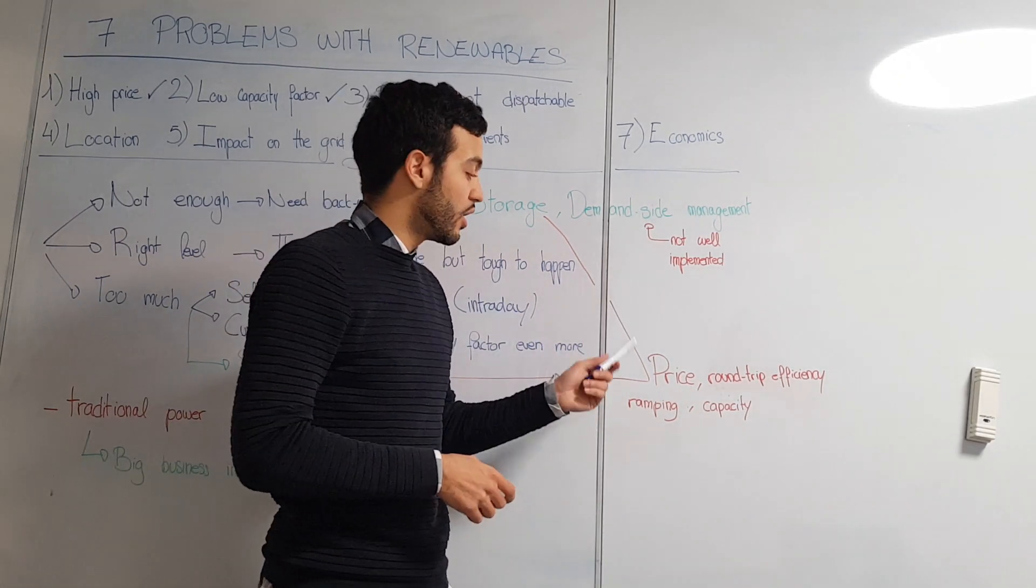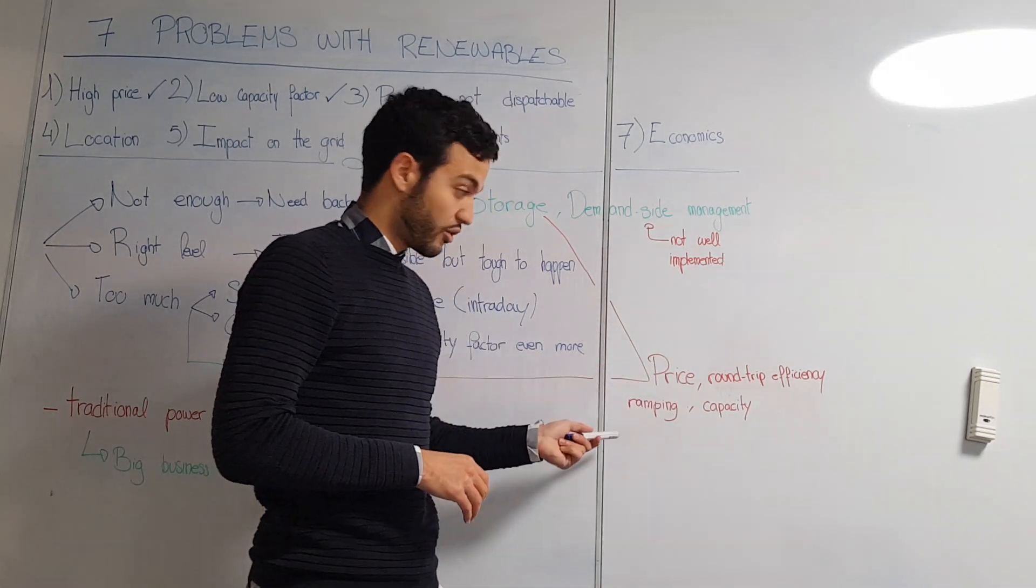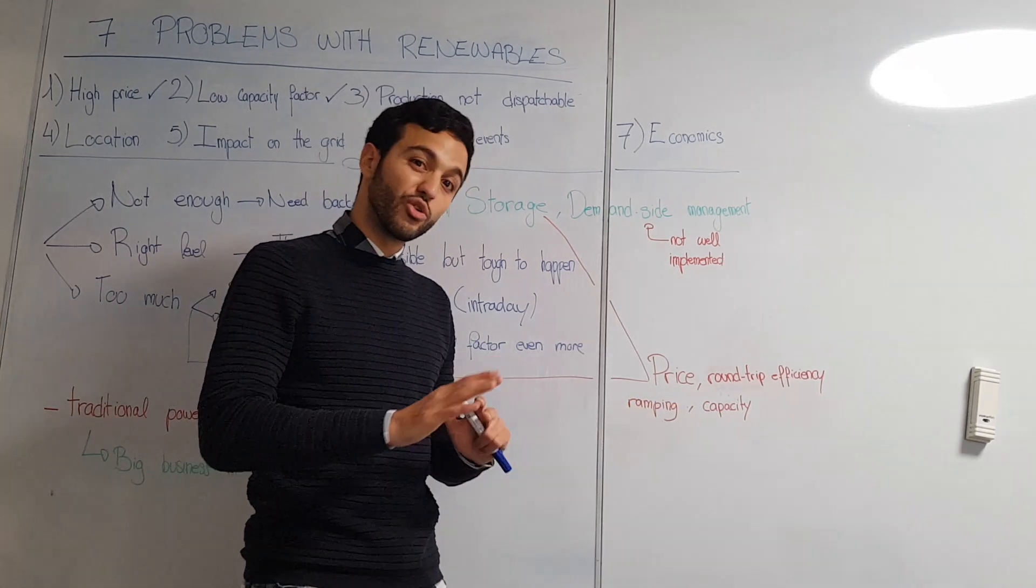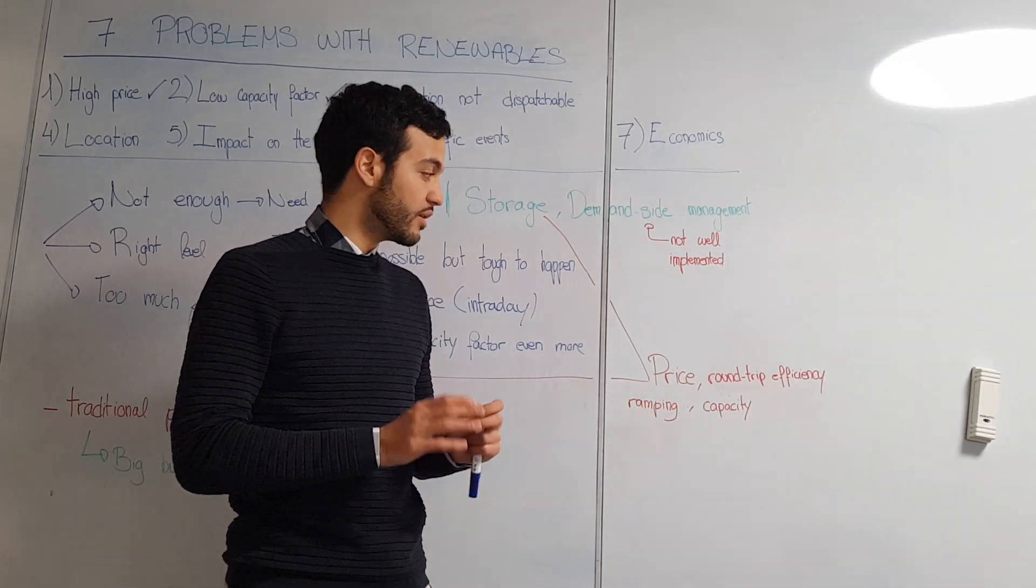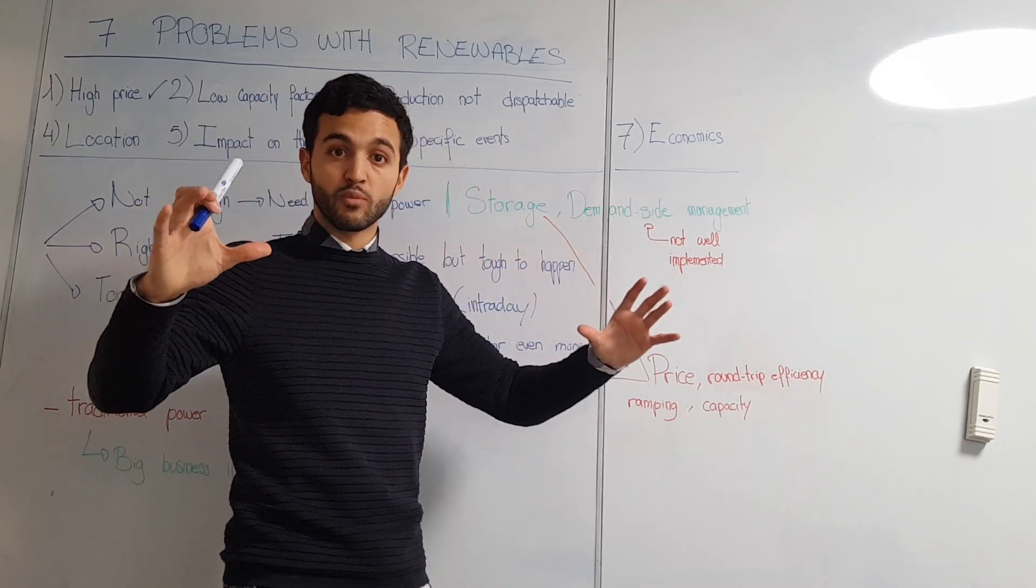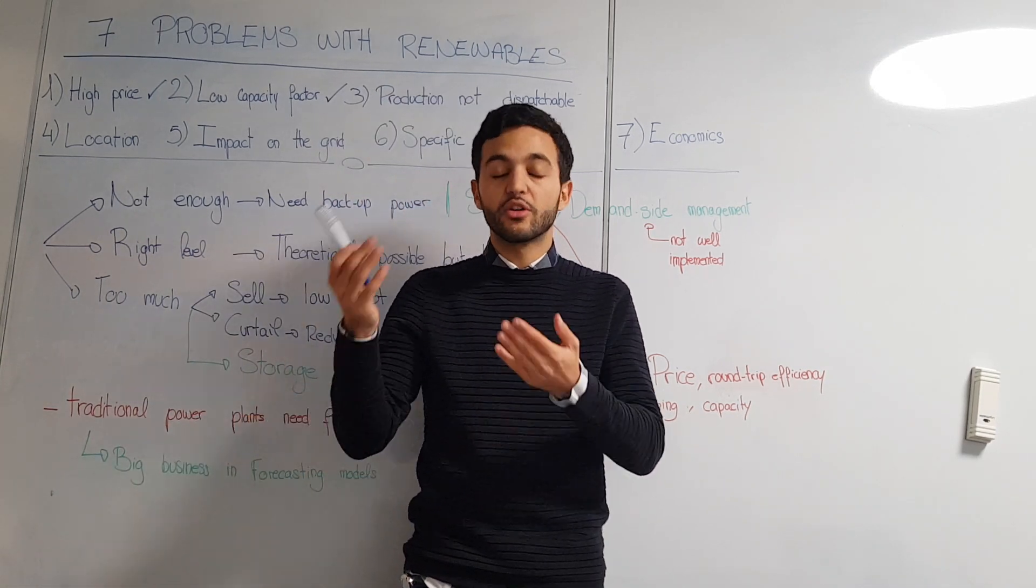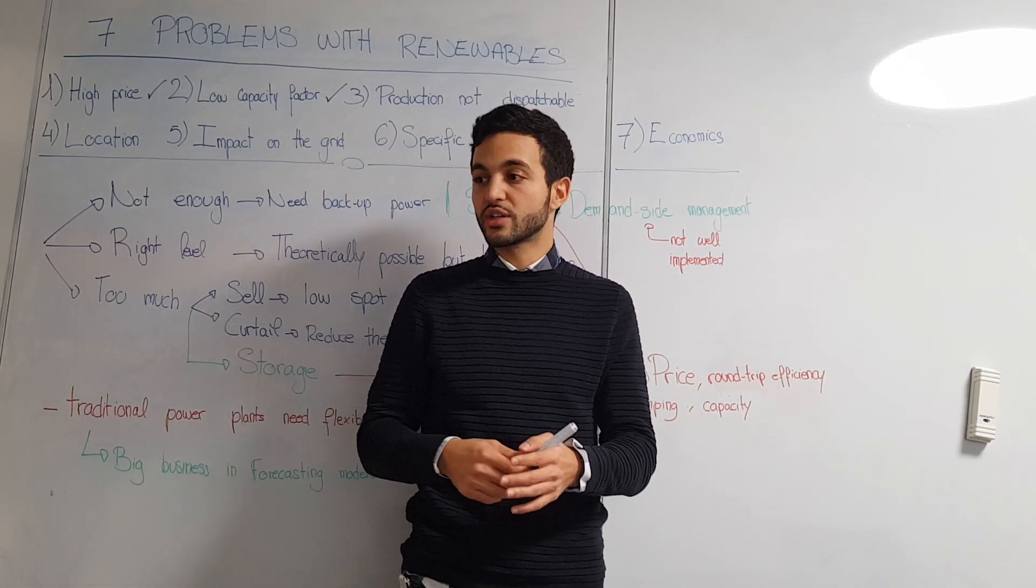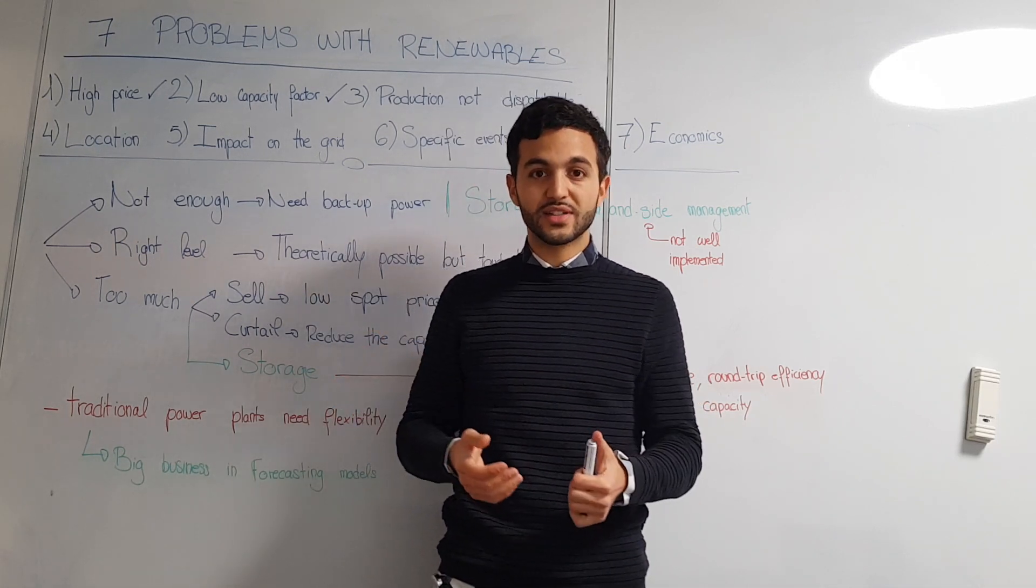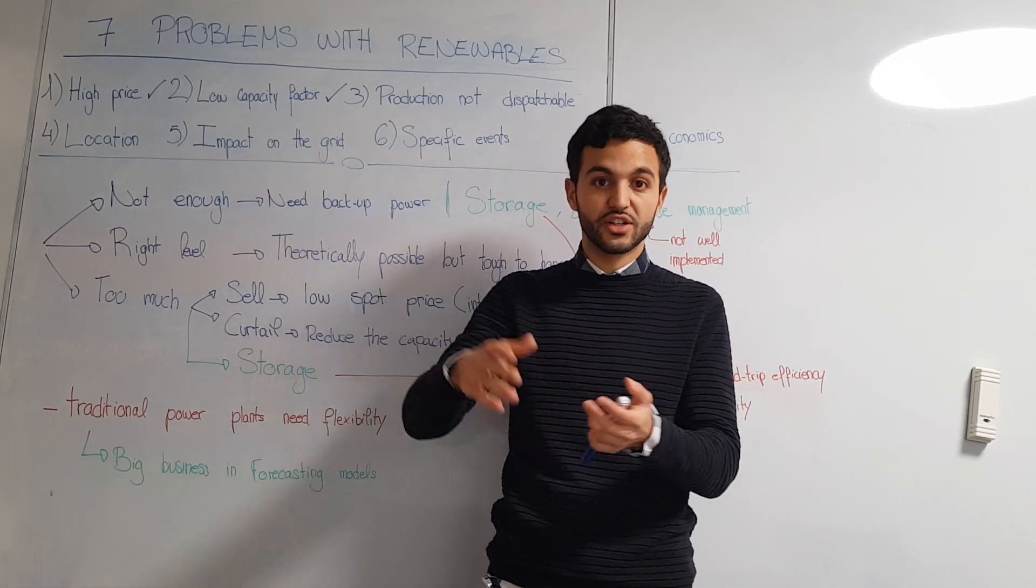Today batteries' price is really declining. The round-trip efficiency is really good. The ramping is very good as well, but the capacity is not that good, so it's not a good solution for big scale. Today the best solution with storage is with dams because you have a huge amount of mechanical energy. The problem with dams is you cannot propose this solution to anyone. For example, people living in the Sahara or Saudi Arabia - you cannot propose them this solution. Dams really depend on geographical conditions.